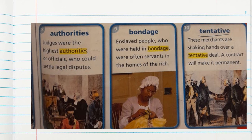Bondage: enslaved people who were held in bondage were often servants in the homes of the rich. Tentative: these merchants are shaking hands above a tentative deal. A contract will make it permanent.